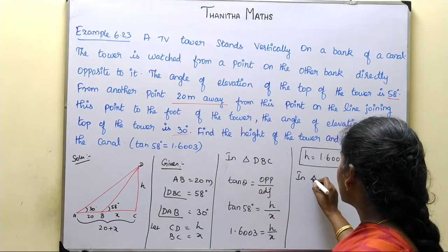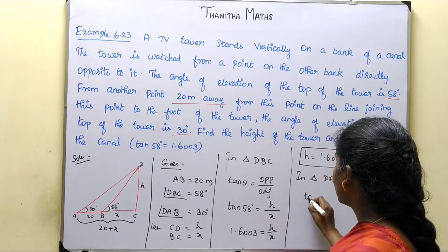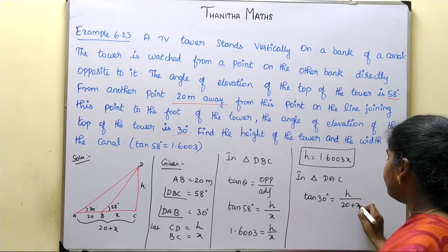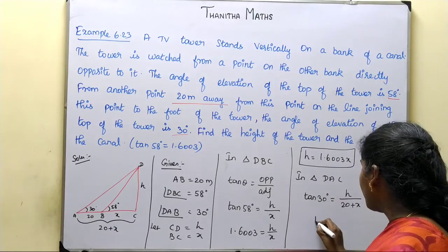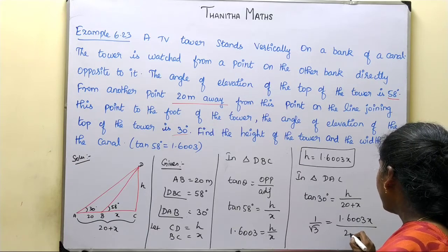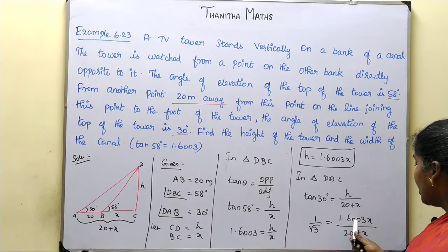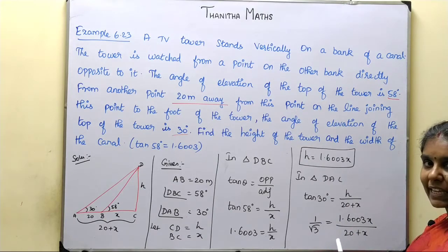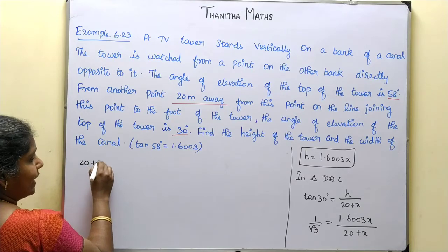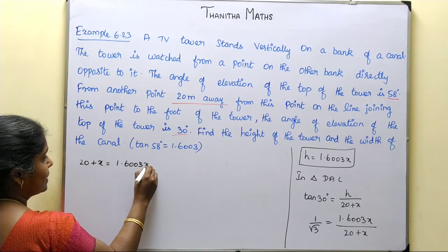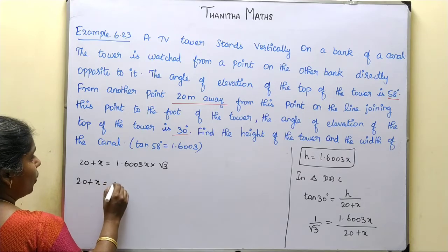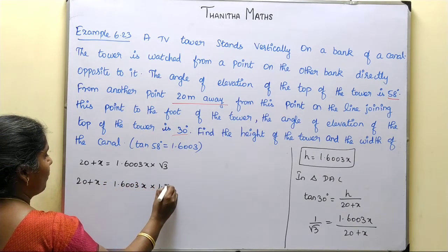Now in triangle DAC, using the same formula: tan 30 degrees equals opposite by adjacent. So tan 30 equals h divided by (20 plus x). The value of tan 30 is 1 by root 3. Substituting h equals 1.6003x, we get 1 by root 3 equals 1.6003x divided by (20 plus x). Cross multiplying: 20 plus x equals 1.6003x into root 3, which is 1.6003x into 1.732.